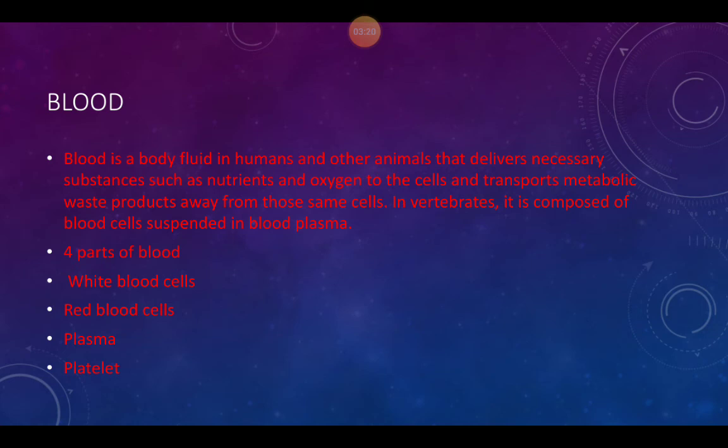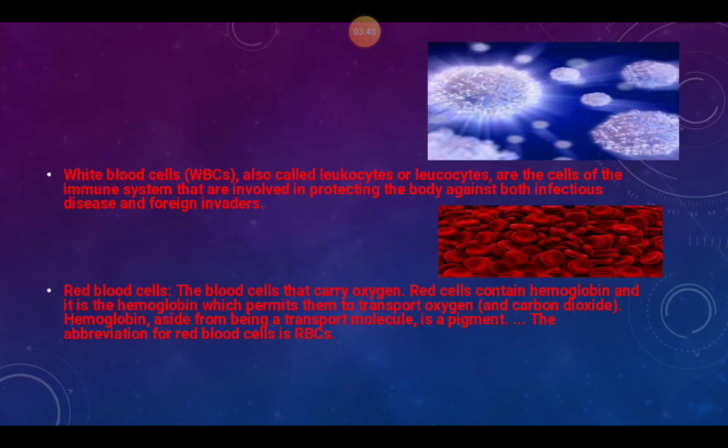Blood is a body fluid in humans and other animals that delivers necessary substances such as nutrients and oxygen to the cells, and transports metabolic waste products away from those cells. In vertebrates, it is composed of blood cells suspended in blood plasma. There are four components of blood: white blood cells (WBCs), red blood cells (RBCs), plasma, and platelets.